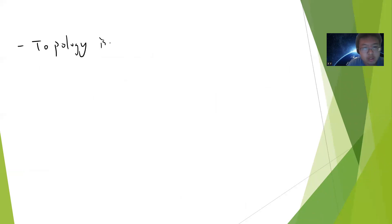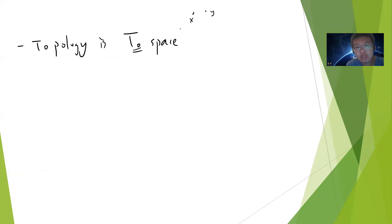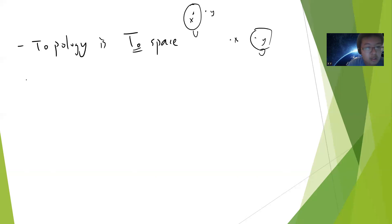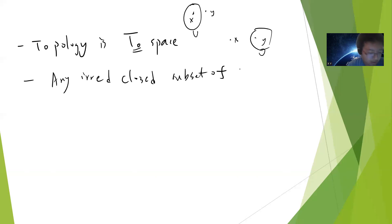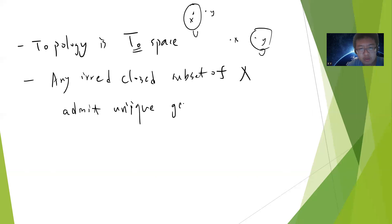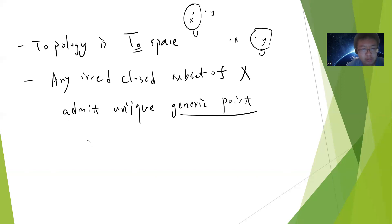A fact about topology: one can prove that a scheme is a T0 space. T0 space basically means that any two points X and Y — you can find an open subset that covers X but not Y, or conversely. This is easy to prove; you can check out my other videos.